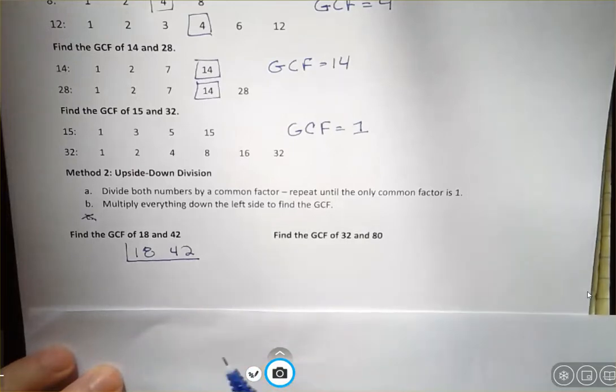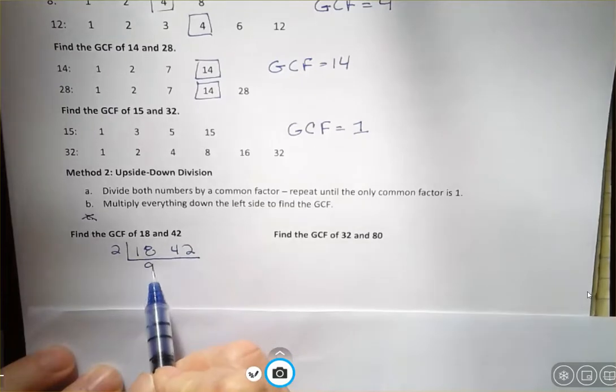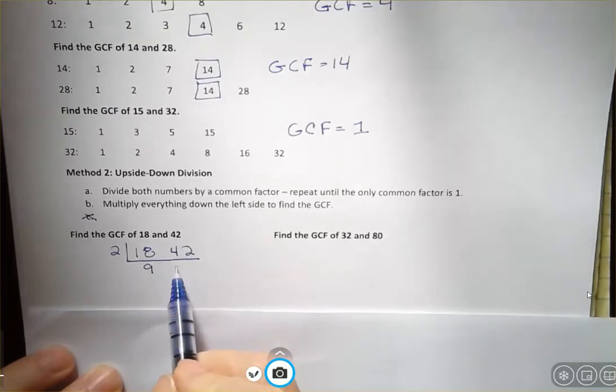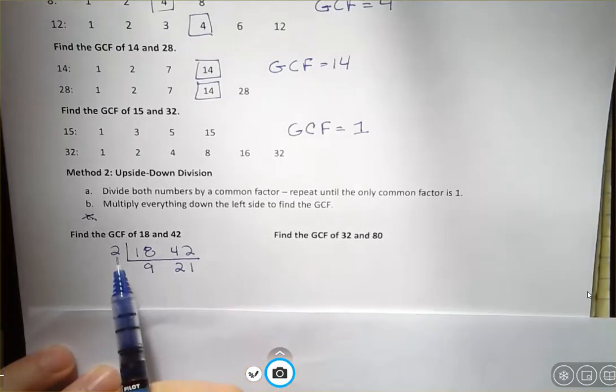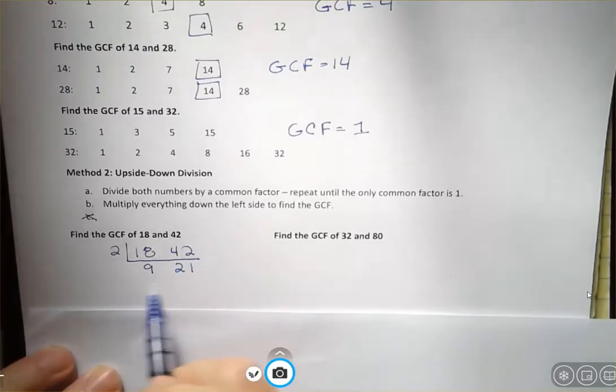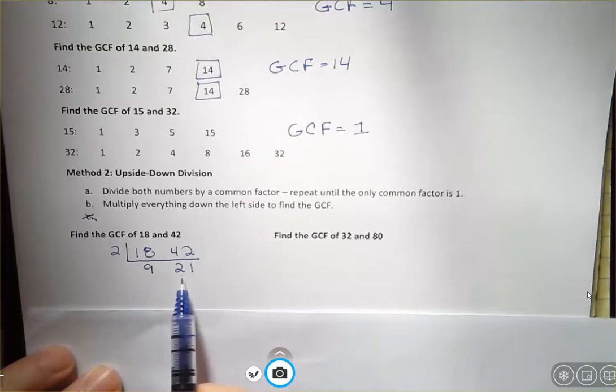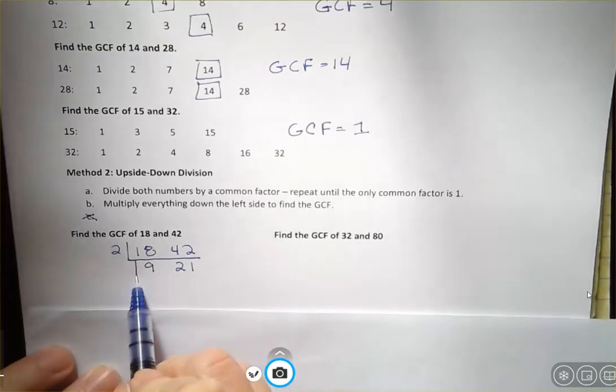It doesn't matter what you start with. So let's say that I saw two. So I say two goes into 18 nine times, and two goes into 42 twenty-one times. Notice that two times 21 is 42, two times nine is 18. That's the upside down division that we're doing. Now I would look at this and say, is there anything else in common?